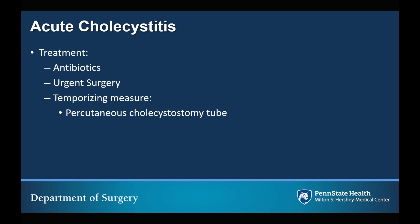The treatment for acute cholecystitis is urgent surgery. The moment you make the diagnosis, you should start the patient on antibiotics. In some patients who are not optimal surgical candidates — meaning they have medical comorbidities that would prevent them from safely undergoing surgery — you can consider a percutaneous cholecystostomy tube to decompress the gallbladder, and then proceed with elective cholecystectomy after optimizing the patient, or have the drain in place for the remainder of the patient's lifetime in certain instances.